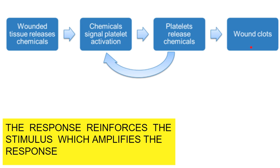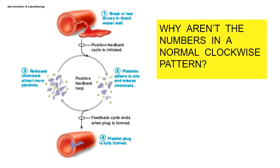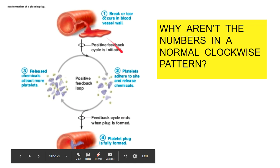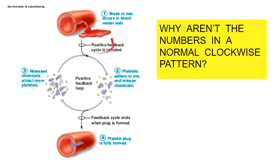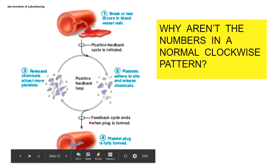The response reinforces the stimulus, which amplifies the response, and it continues on and on. We look at these as loops — reinforcing rather than an hourglass shape. In a blood clotting diagram: a break or tear occurs in a blood vessel wall, initiating the positive feedback loop. Platelets adhere to the site and release chemicals; the released chemicals attract more platelets, which adhere to the site and release more chemicals, attracting even more platelets — looping continuously with chemicals attracting platelets, platelets releasing chemicals, until a plug is formed and the blood vessel leaking is stopped.